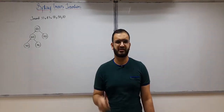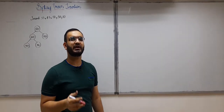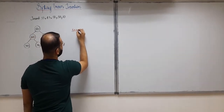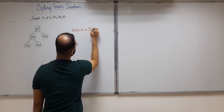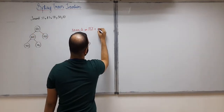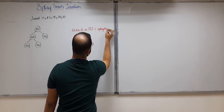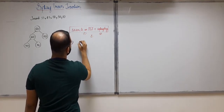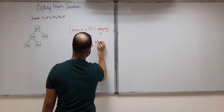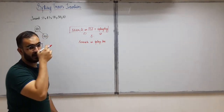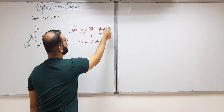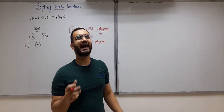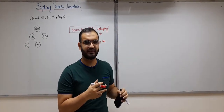In the previous video we also learned how to perform search in splay trees — search in a splay tree is the same as search in a binary search tree plus an additional step of splaying, where the searched element is brought to the root of the splay tree by performing several operations like zig, zig-zig, and zigzag, whichever is applicable.